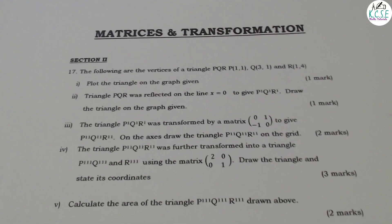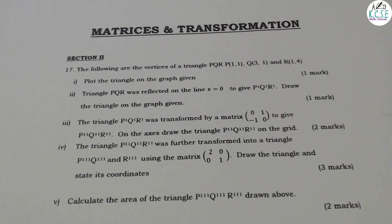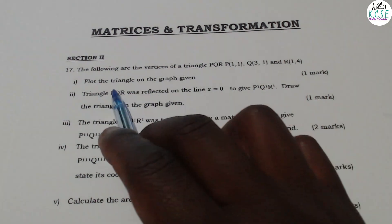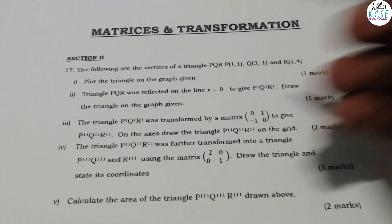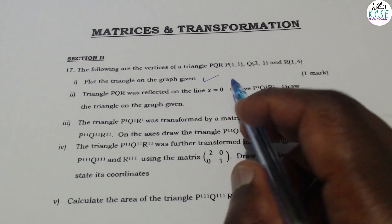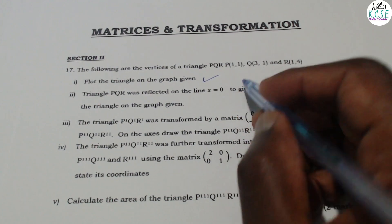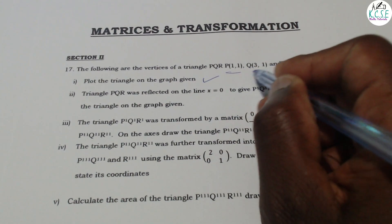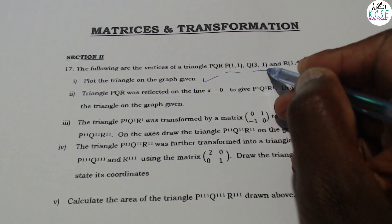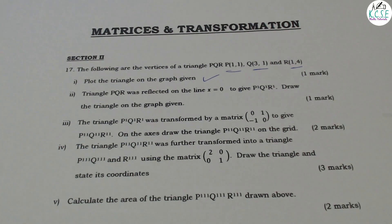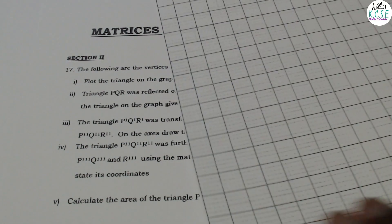So that is the question. Let's go to the first part. You're supposed to plot triangle P(1,1), Q(3,1), and R(1,4). Let me get the graph paper and use it to plot that.